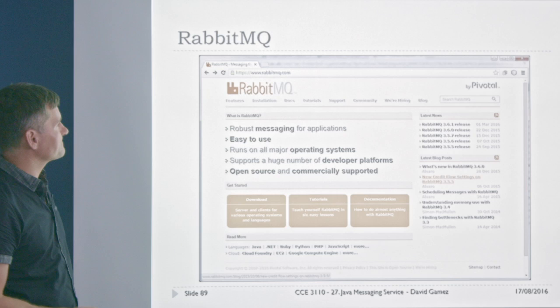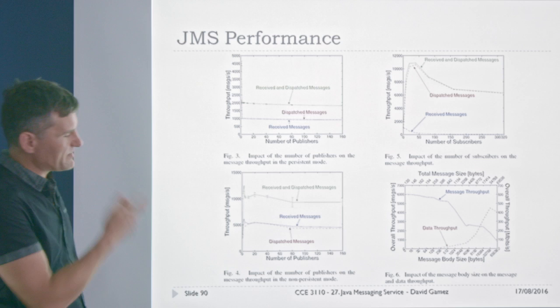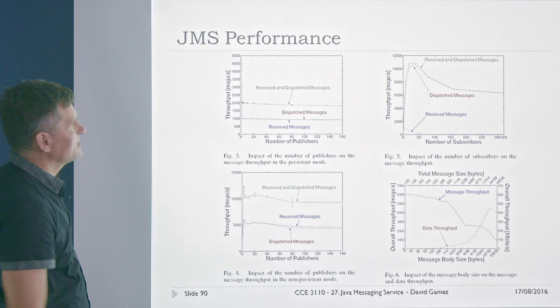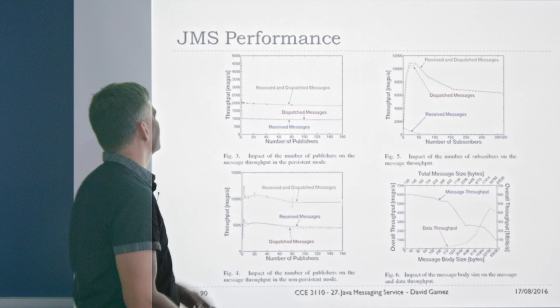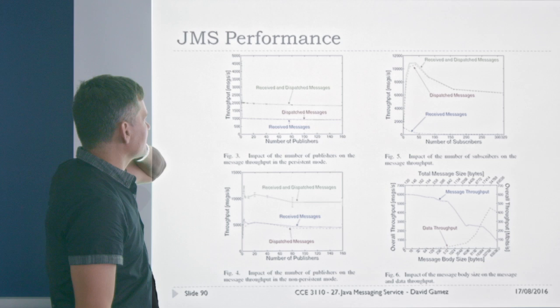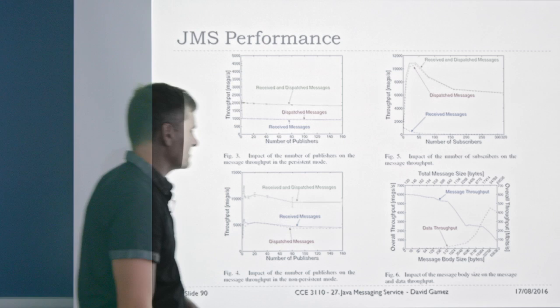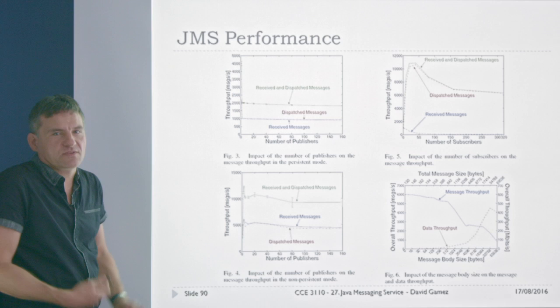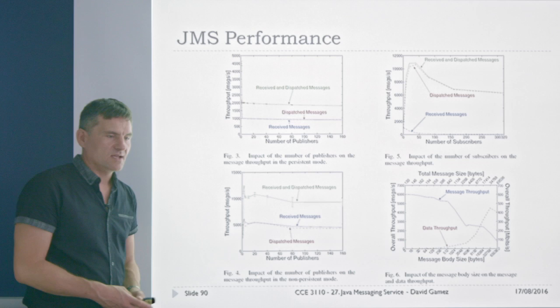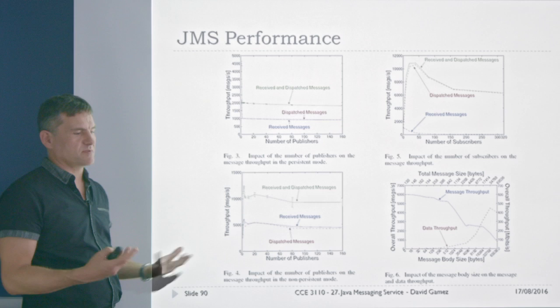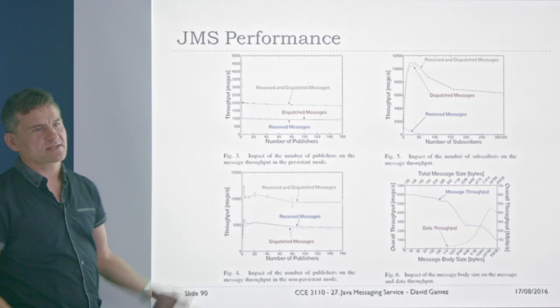There's a performance paper on the class website. Throughput is roughly 5,000 to 10,000 messages per second, maybe 2,000 to 10,000 depending on message size and number of producers and consumers. That's pretty good — most enterprise systems are fine with that. All of Tesco's sites across the world are not going to need to send more than a few thousand messages per second, so it's plenty good enough for enterprise applications.